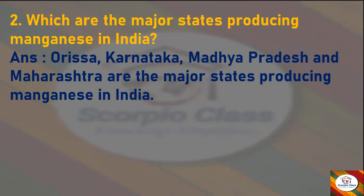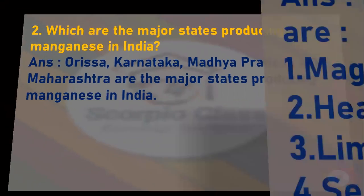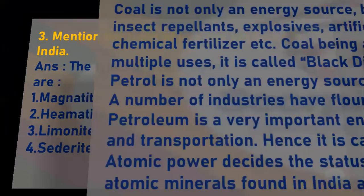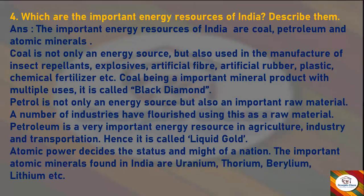Next question: Mention the types of iron ore produced in India. Answer: The types of iron ore produced in India are magnetite, hematite, limonite, and siderite. So these are the types of iron ore that are produced in India.